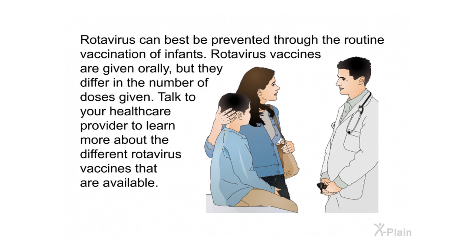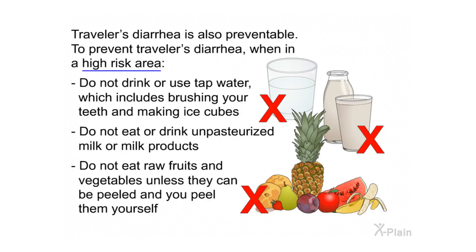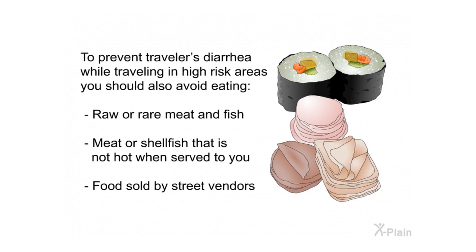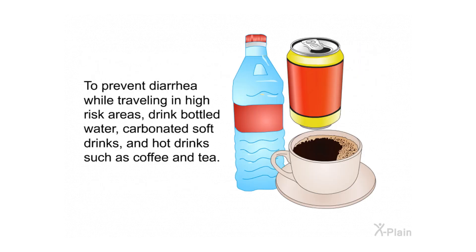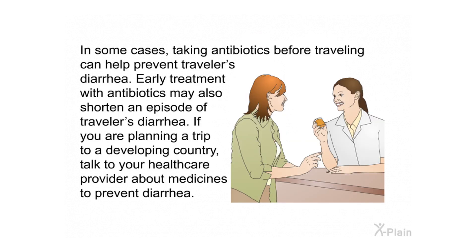Rotavirus vaccines are given orally and differ in the number of doses required. Talk to your health care provider to learn more about available rotavirus vaccines. Traveler's diarrhea is also preventable. When in a high-risk area, do not drink or use tap water — including for brushing your teeth or making ice cubes. Do not eat unpasteurized milk or milk products. Do not eat raw fruits and vegetables unless you can peel them yourself. Avoid raw or rare meat, fish, shellfish not served hot, and food sold by street vendors. Drinking bottled water, carbonated soft drinks, and hot drinks such as coffee and tea is recommended. In some cases, taking antibiotics before traveling can help prevent traveler's diarrhea.